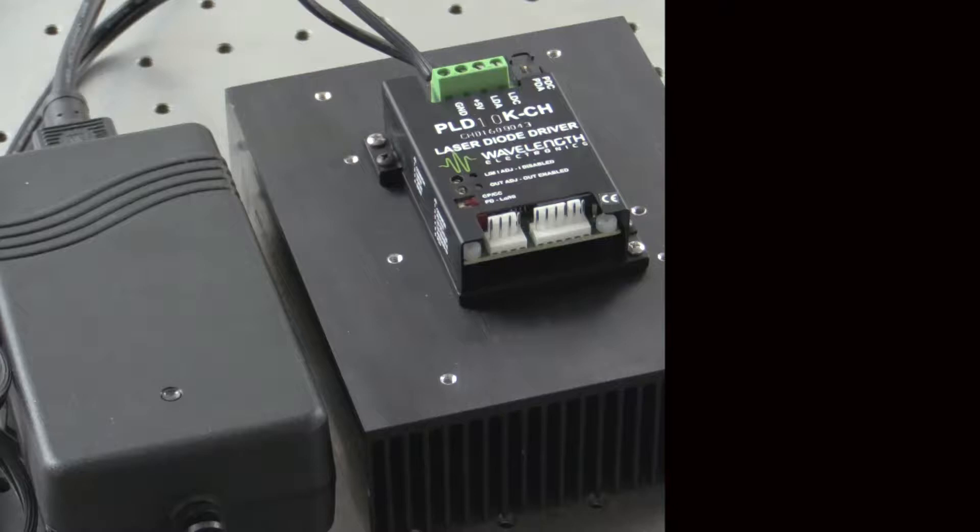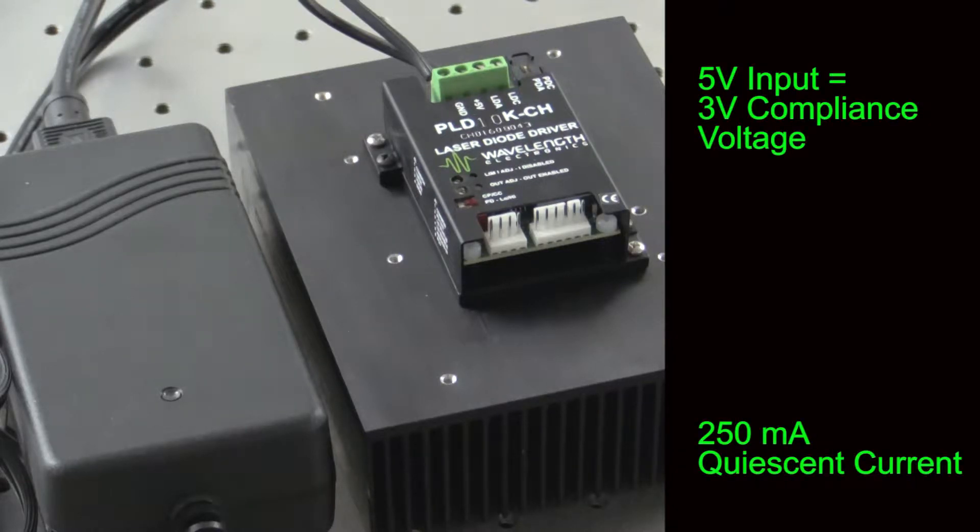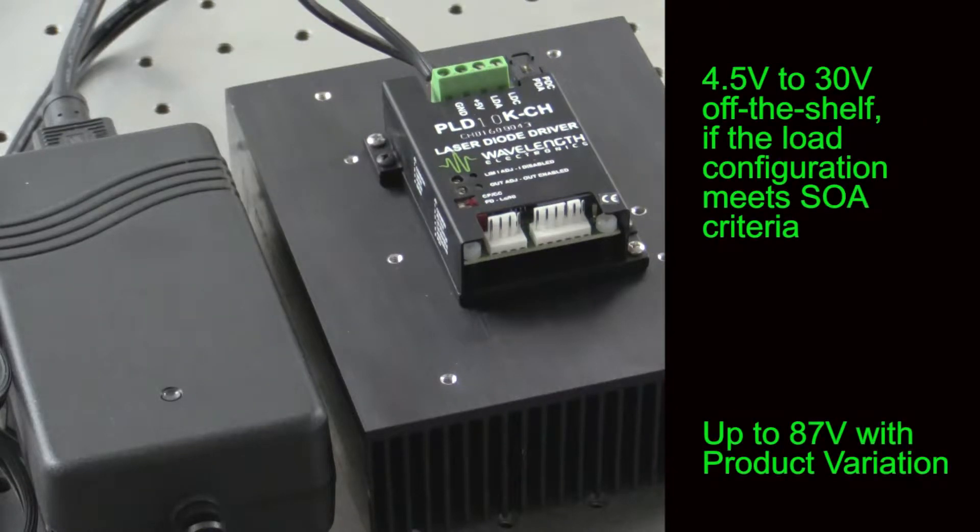Single supply operation at 5 volts is possible up to 10 amps. At 5 volts in, 3 volts maximum will be delivered to the laser diode. The PLDs can operate from 4.5 to 30 volts in standard off-the-shelf versions if the load configuration meets the safe operating area criteria.